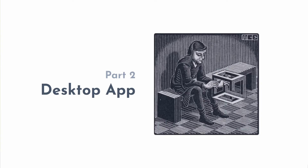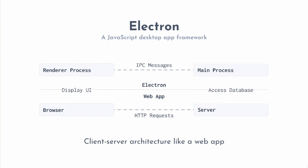Part two: desktop app. For desktop I'm using Electron, which is what Frappe Books is based on. The structure is somewhat similar to a web app. Instead of doing HTTP requests, you're doing IPC messages. And instead of having a browser and a server, you have a render process and a main process — the render process sends IPC messages to the main process, and that responds with data, or vice versa.